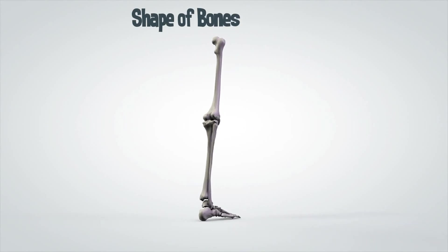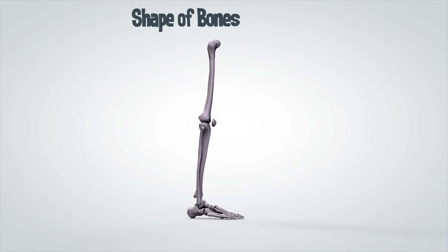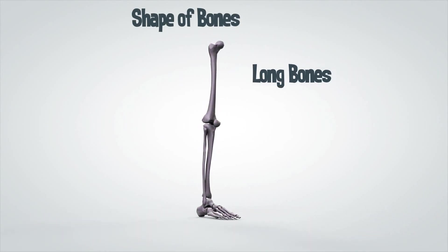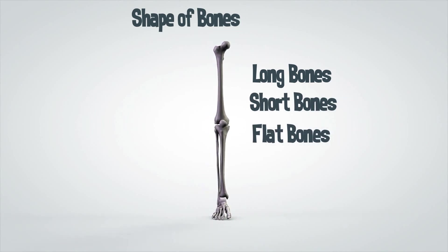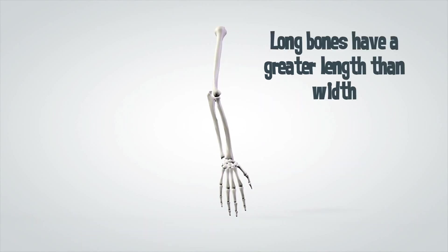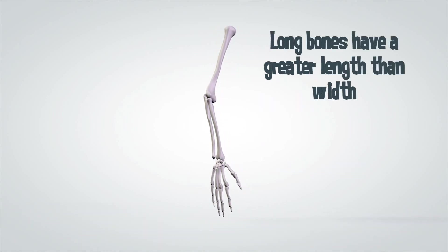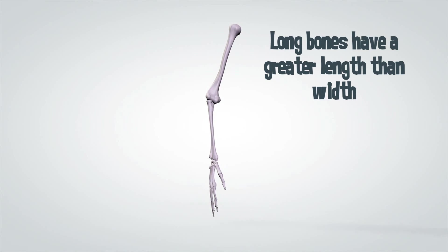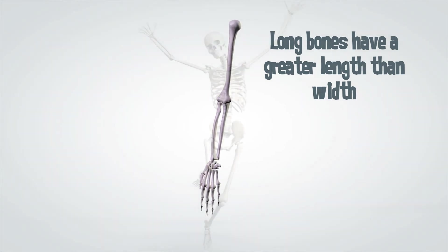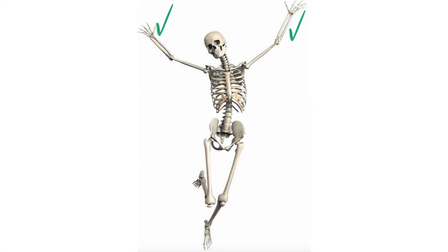Bones are classified according to shape: long bones, short bones, flat bones, and irregular bones. Up first, long bones. They are longer than they are wide. They are found in your arms and legs. Examples include the ulna, radius, femur, tibia, and fibula.